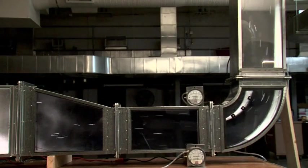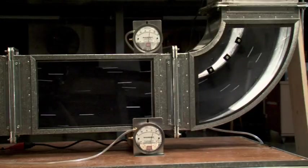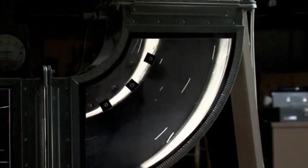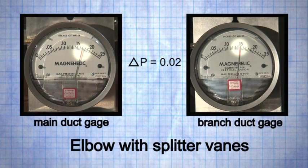A hybrid between a square throat elbow with turning vanes and a radius elbow is an elbow with splitter vanes. This type of elbow presents the lowest pressure loss to the duct system, which can be seen in the smooth airflow paths and the lowest pressure losses to the duct system and through the fitting.